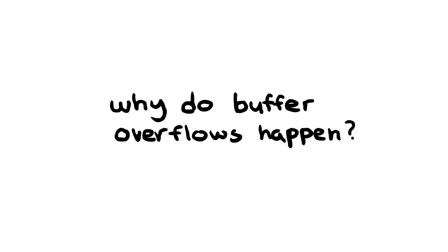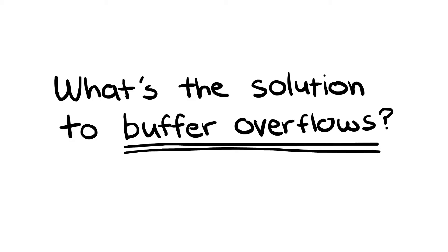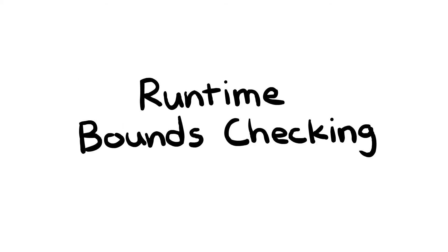Let's talk about why these overflows are even allowed to happen in the first place. Clearly putting six numbers into an array that holds five numbers is not an operation we should allow. So what's the solution to buffer overflows? The solution is known as runtime bounds checking.